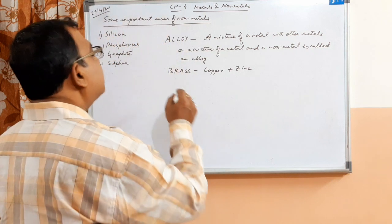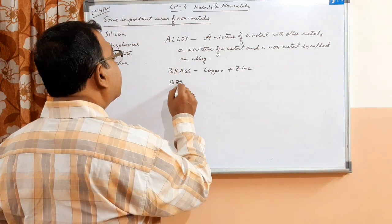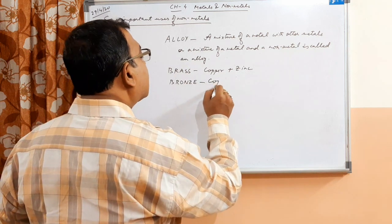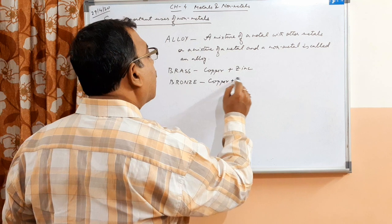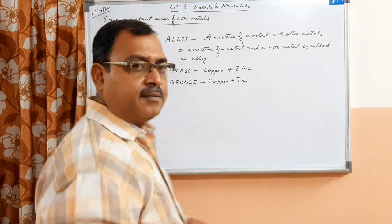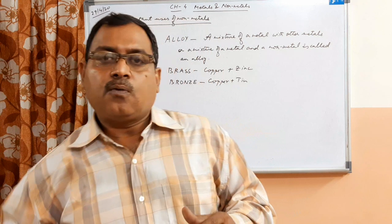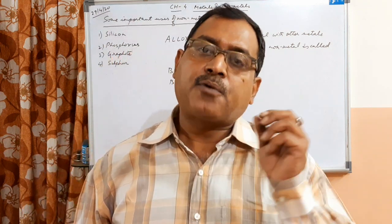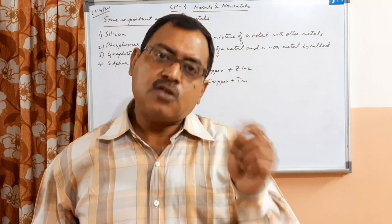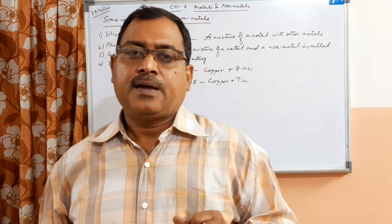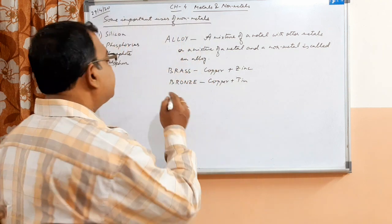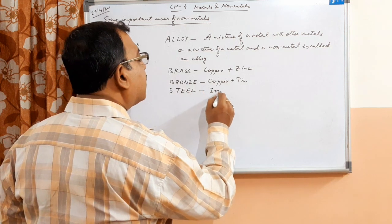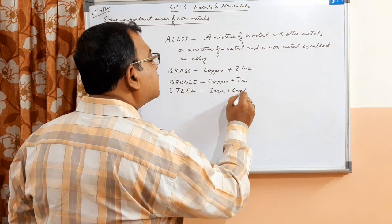Another alloy is bronze. This is a mixture of copper and tin. So whenever these alloys are made, it bears the properties of each of its constituent metals. Similarly, steel is also an alloy of iron and carbon.